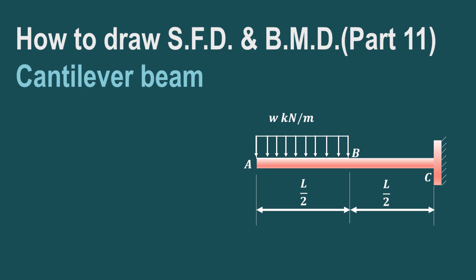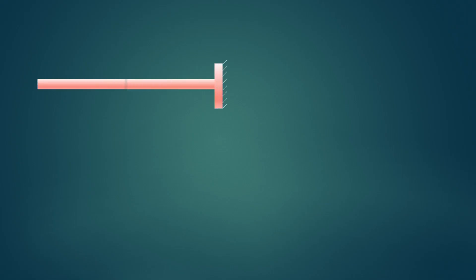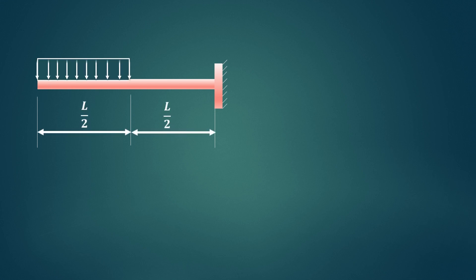In this video we will try to understand how to draw shear force diagram and bending moment diagram in case of a cantilever beam carrying uniformly distributed load. The arrangement for the beam is as shown: there is a uniformly distributed load acting for half of the span length, that is L by 2, from the free end. AB carries a UDL of W kN per meter.